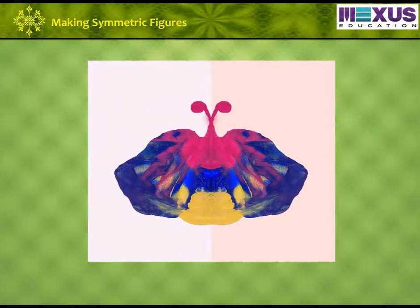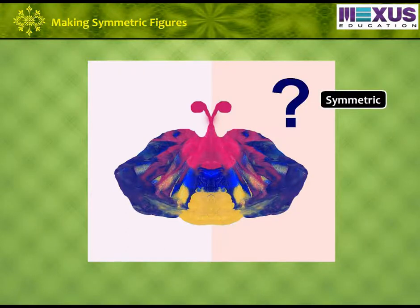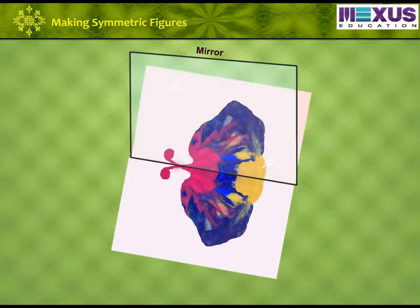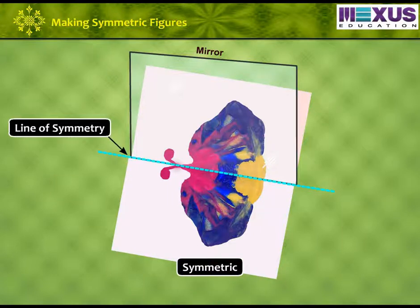If we observe, we can see that both the halves are identical. Is the resulting figure symmetric? Let's check if we place a mirror in between the painting. We see that half of the image on the paper is exactly like the other half of the image on the mirror. Hence, this image is said to be symmetric as here we see line of symmetry.